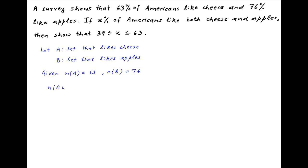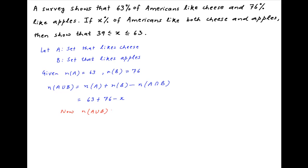We know that the number of people in set A union B, or people who like either apples or cheese, is equal to the number of people who like apples plus the number who like cheese minus the number who like both. The number who like cheese is 63, the number who like apples is 76, and let x denote the number who like both, or A intersection B. The number of people in A union B must be less than or equal to the total population, which is 100.